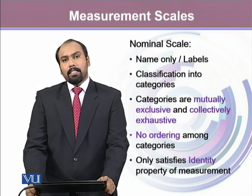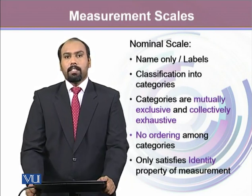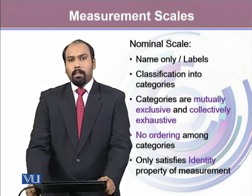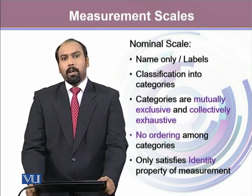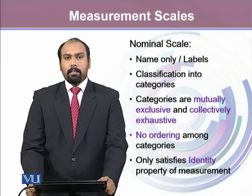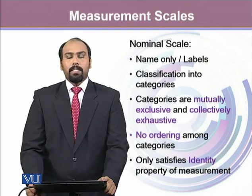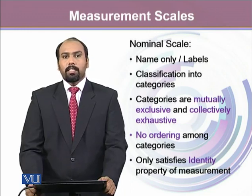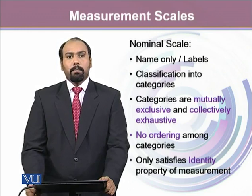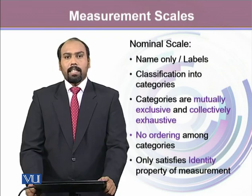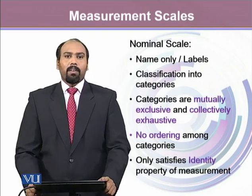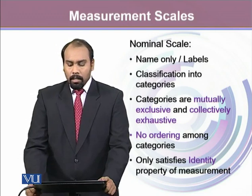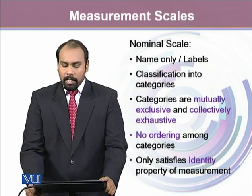The first type of measurement scale, inherently for qualitative variables, is the nominal scale of measurement. Nominal scale, as its name suggests, is name only — these are just labels. As we already know, qualitative variables carry certain categories. Each category can be assigned a numeric number, but that number does not contain any magnitude. These are just the names.